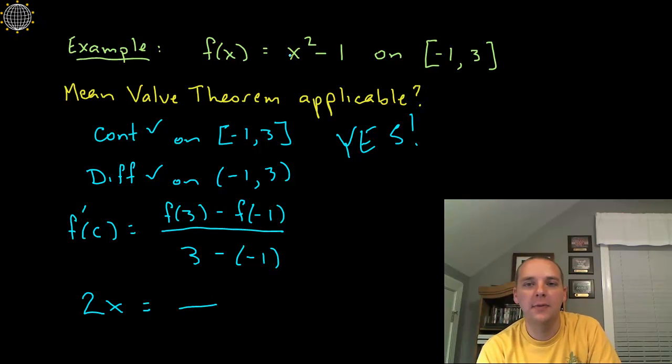Let's see, f of 3: 3 squared is 9, 9 minus 1 makes 8, minus if you plug in negative 1, negative 1 squared is 1, 1 minus 1 is 0, divided by 3 minus negative 1, which is 3 plus 1, that makes 4.